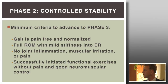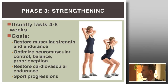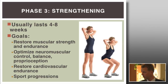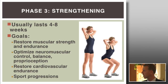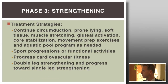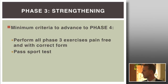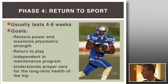Criteria to enter phase three: pain-free normalized gait, full range of motion with only mild stiffness possibly in external rotation, no joint inflammation, and successful initiation of functional exercises. Phase three typically lasts four to eight weeks, focusing on restoring muscular strength and endurance, optimizing neuromuscular control and proprioception, building cardiovascular endurance, and beginning sport progression — starting some early controlled sport-specific activities. Advancement moves from double-leg to single-leg strengthening.